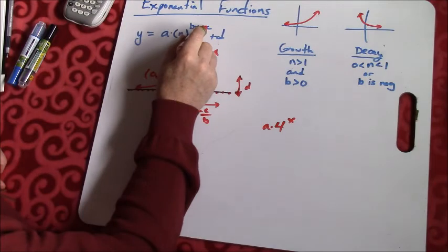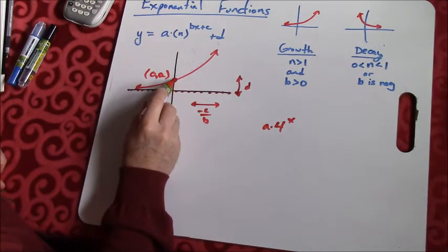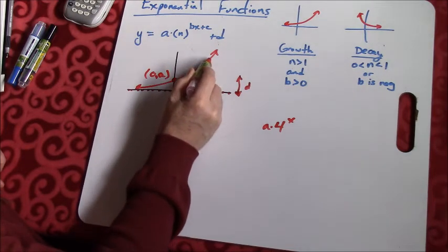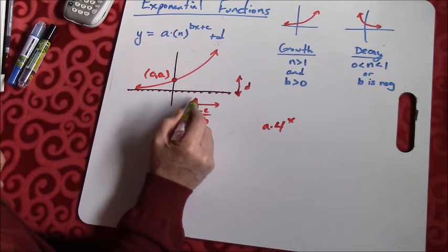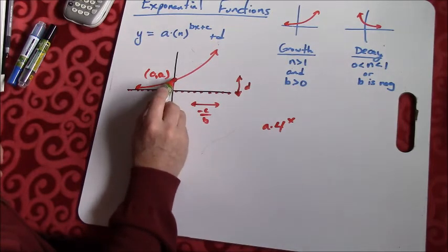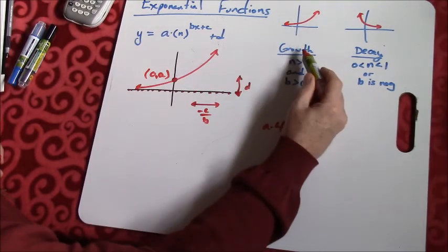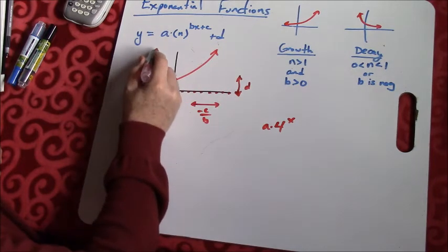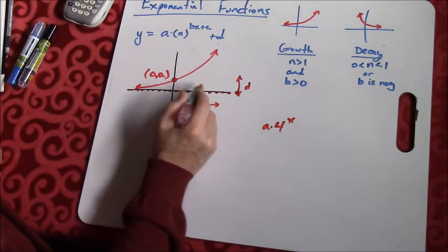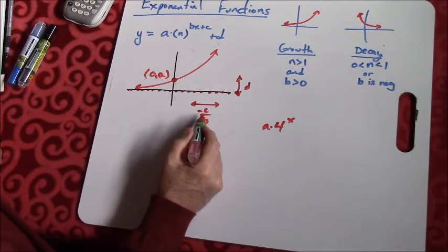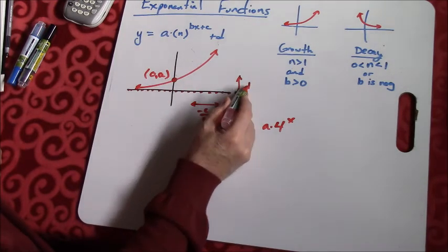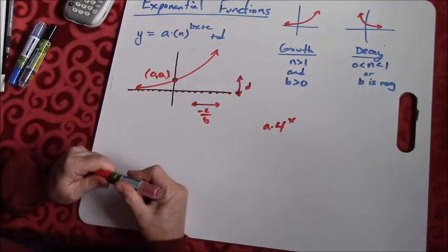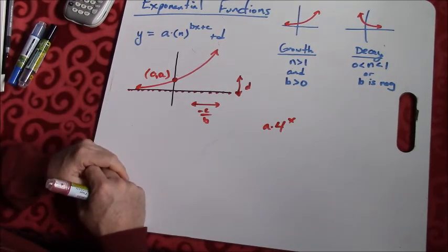Now once you add in c values and d values, it's going to move that point. Negative c over b, it's going to take this point and shift it over a little bit. Your d value is going to shift it up or maybe shift it down. But that's what we're looking at, is just taking this key point. I first of all want to decide, do I have growth or decay? That's going to tell me whether my graph goes up as I go left to right, or does it go down as I go left to right? And then once I know where this key point is, then I'm going to look to see what negative c over b equals, and also what d equals. That's going to tell me how far I shift it left or right or up or down. And really, that's it. That's our rules for graphing an exponential function.